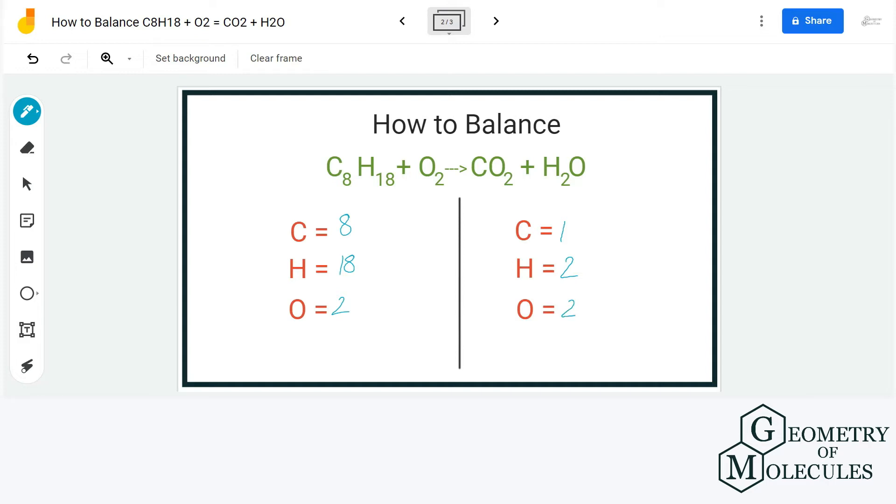We will balance the oxygen atoms at the last. We will first start with the carbon atoms. As you can see here, on the reactant side we have 8 carbon atoms, but on the product side we only have 1.